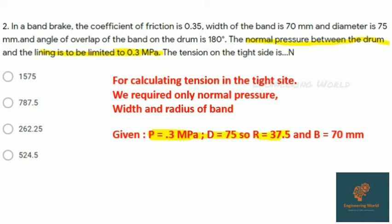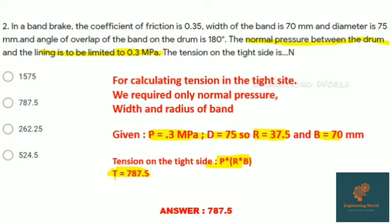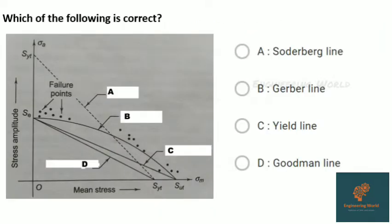For calculating tension on the tight side, we require only normal pressure, width, and radius of the band. The formula is: tension on the tight side equals P into R into B. Please note down this formula: pressure into R into B, where R into B is an elemental area. By calculating, we get 787.5.